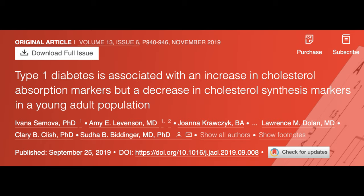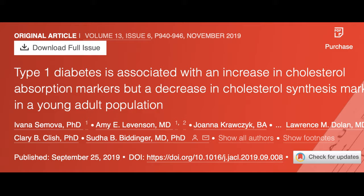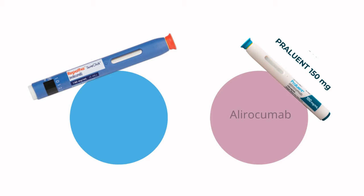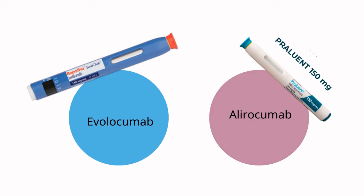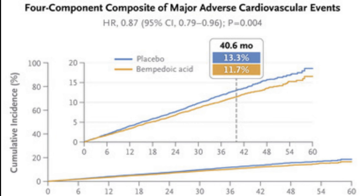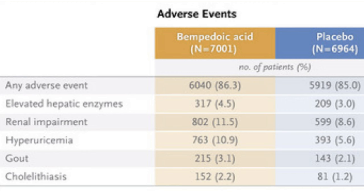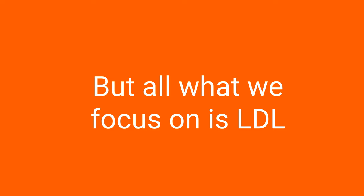Ezetimibe has greater efficacy in young adults with type 1 diabetes because these patients have increased cholesterol absorption. PCSK9 inhibitors, when given alongside high-intensity statins, significantly reduce cardiac events in patients with diabetes and atherosclerotic disease, as shown in the FOURIER trial with evolocumab and in ODYSSEY OUTCOMES with alirocumab. Bempedoic acid, when added to statins, also reduces LDL cholesterol and major cardiac events, and did not induce new diabetes or worsen diabetes, but it results in more gout and gallstones.